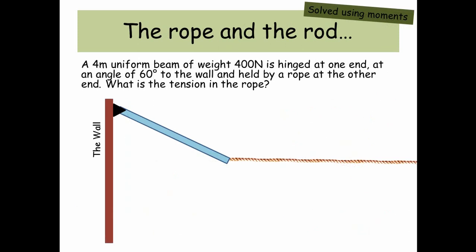The rope and the rod. A 4 meter uniform beam of weight 400 newtons is hinged at one end at an angle of 60 degrees to the wall and held by a rope at the other end. What is the tension in the rope? Ok so it's a uniform beam so the centre of mass of the rod is going to be halfway down our beam. So if it's 4 meters then the actual weight is going to act at 2 meters. We've got our angle which is 60 degrees and we've got our force of tension in the rope and there's our pivot point.